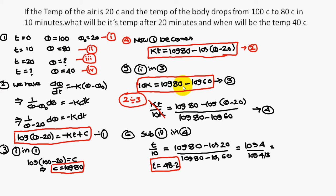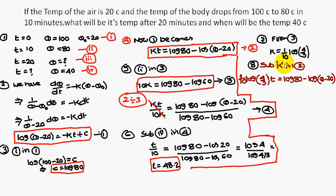To find the third question, from equation 3 we solve for k: k is equal to 1 by 10 times log(4 by 3). We substitute this k value into the second equation, giving (1 by 10) times log(4 by 3) times t equal to log 80 minus log(theta minus 20).